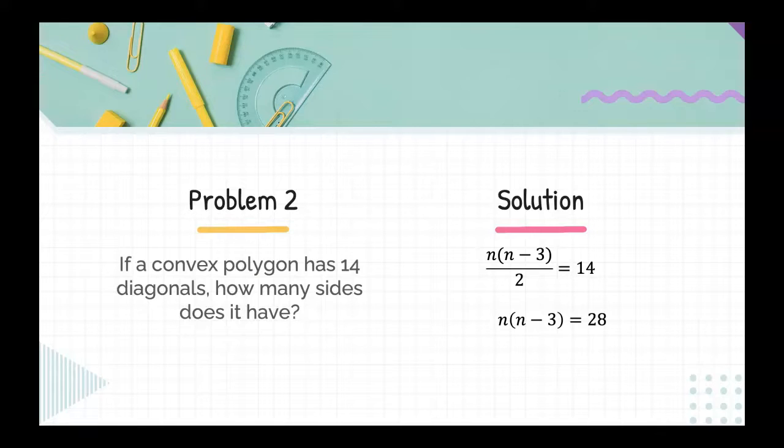You could use algebra, quadratic formula, factoring, et cetera. But I might just say 28 is the product of seven and four, which are three apart. So N equals seven, because seven times four equals 28. Therefore, this polygon has seven sides.